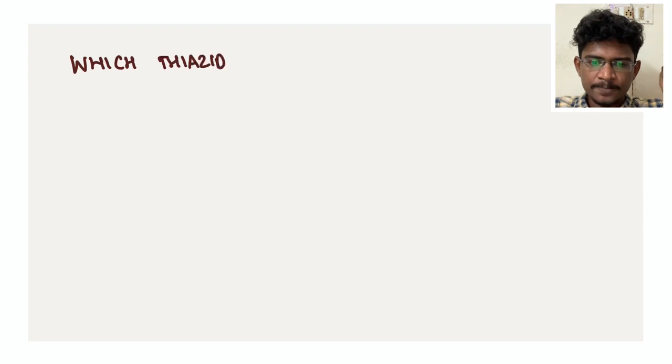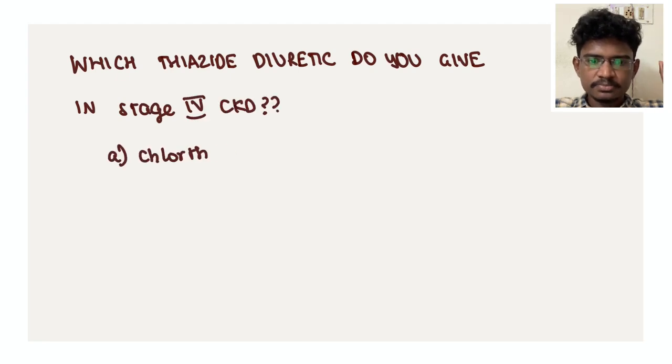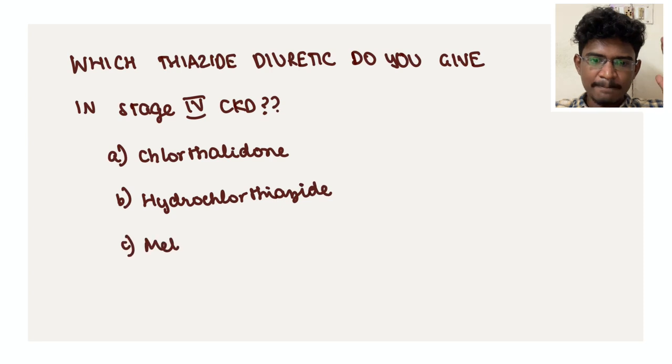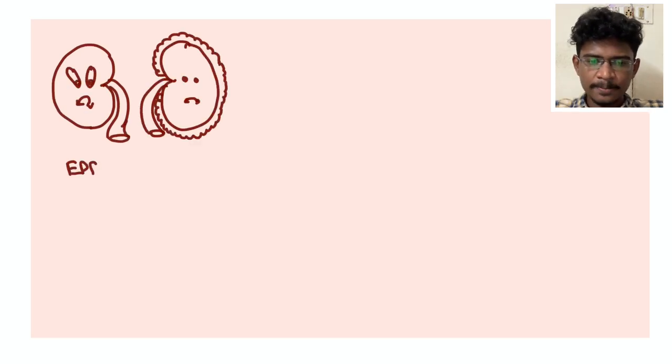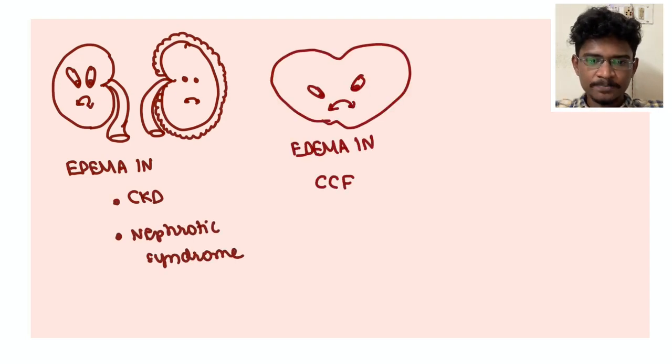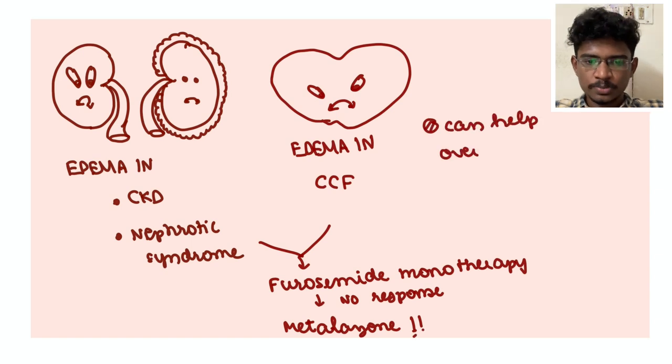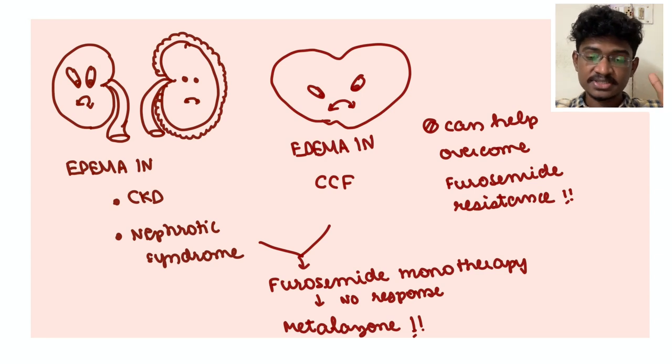Which thiazide diuretic you will use in stage 4 CKD? Option A: Chlorthalidone, Hydrochlorothiazide, Metolazone, or Indapamide. So here the option is metolazone. If you see in CKD patients and nephrotic syndrome patients where their edema is not resolving, and also in heart failure patients, we'll first try with Lasix, furosemide, maximum dose. If it is not controlled, then we will start this metolazone because it has tendency to overcome this furosemide resistance. And also it acts even in low GFRs. These are the benefits of this metolazone.